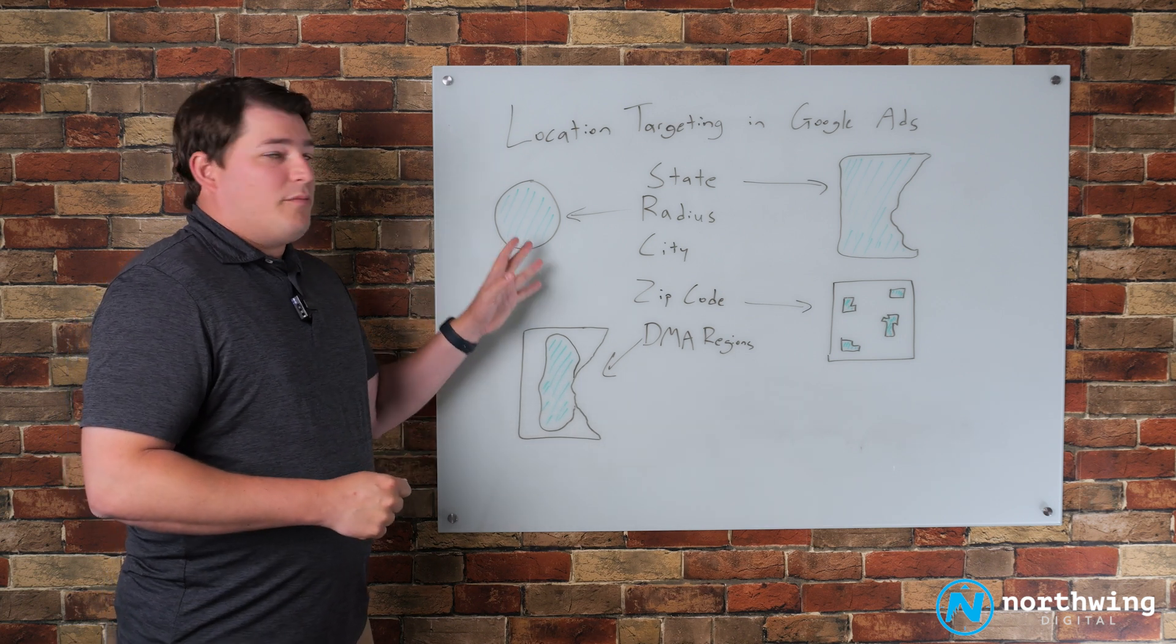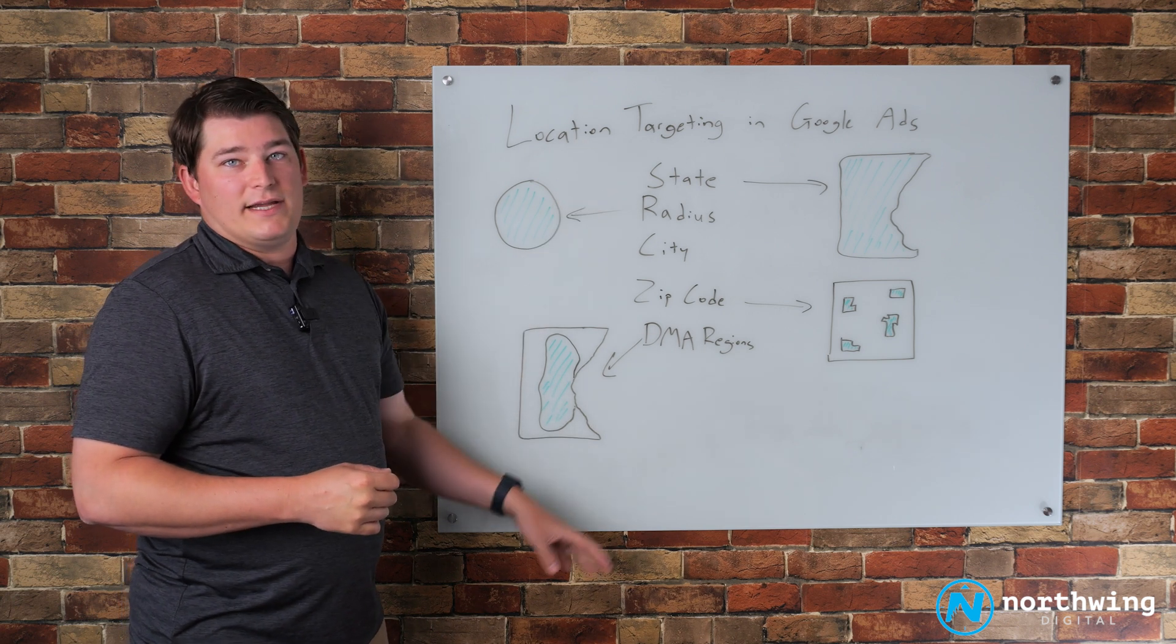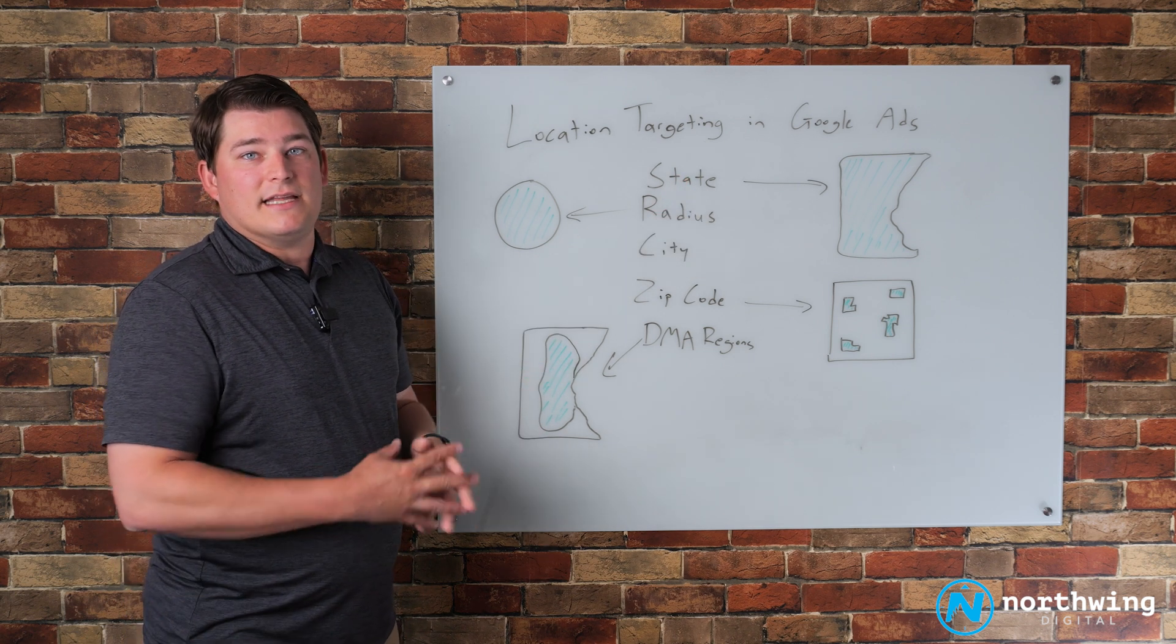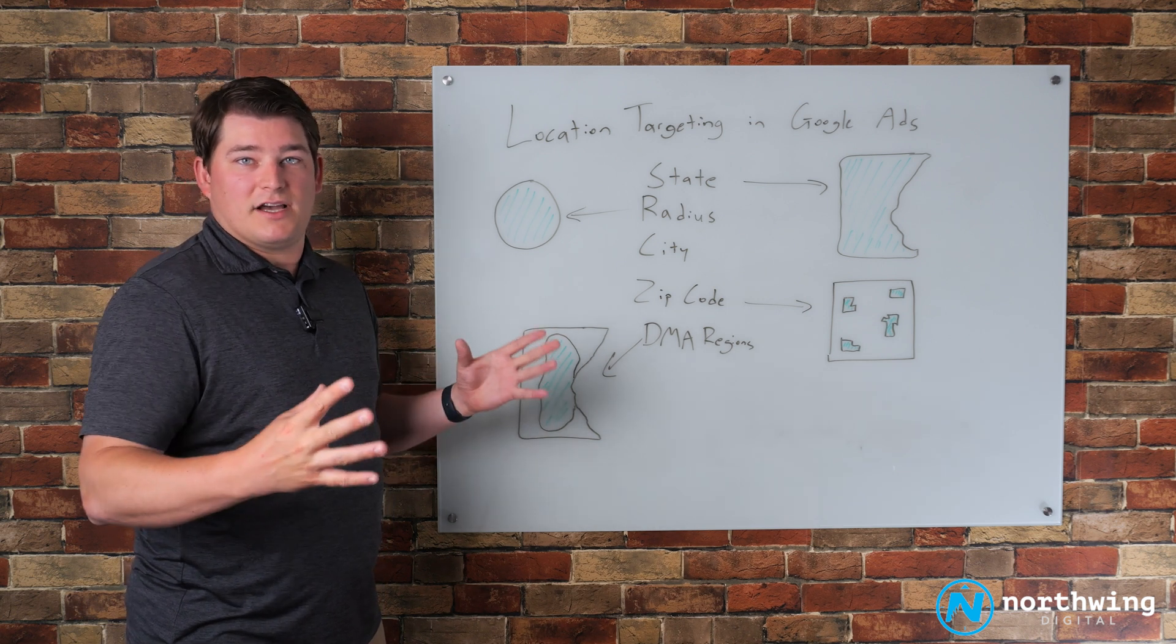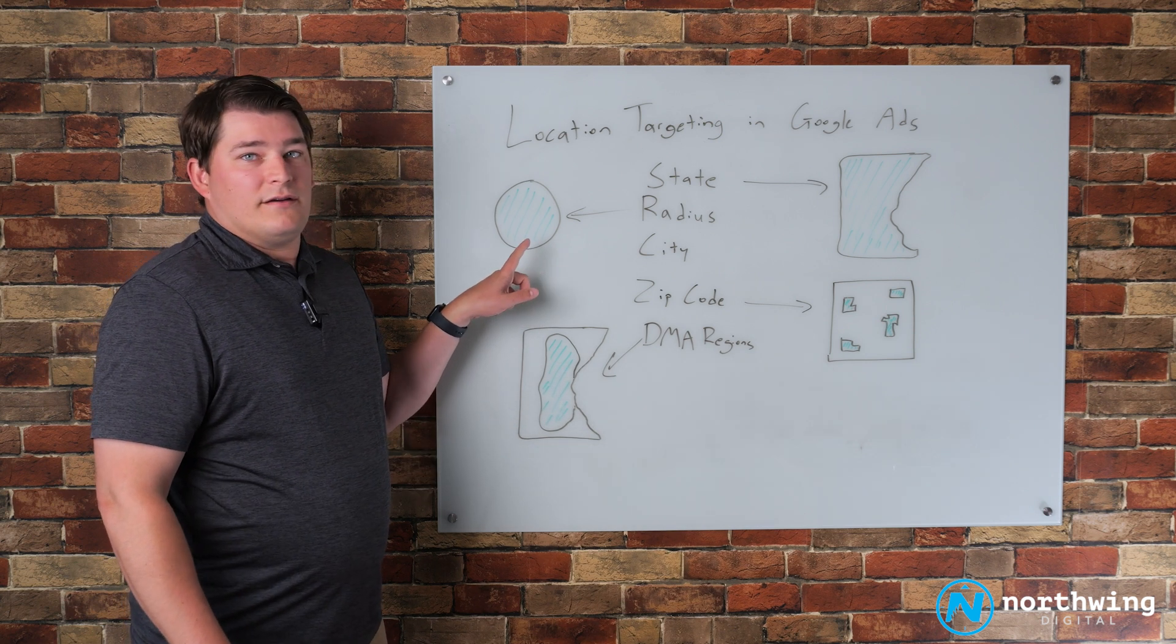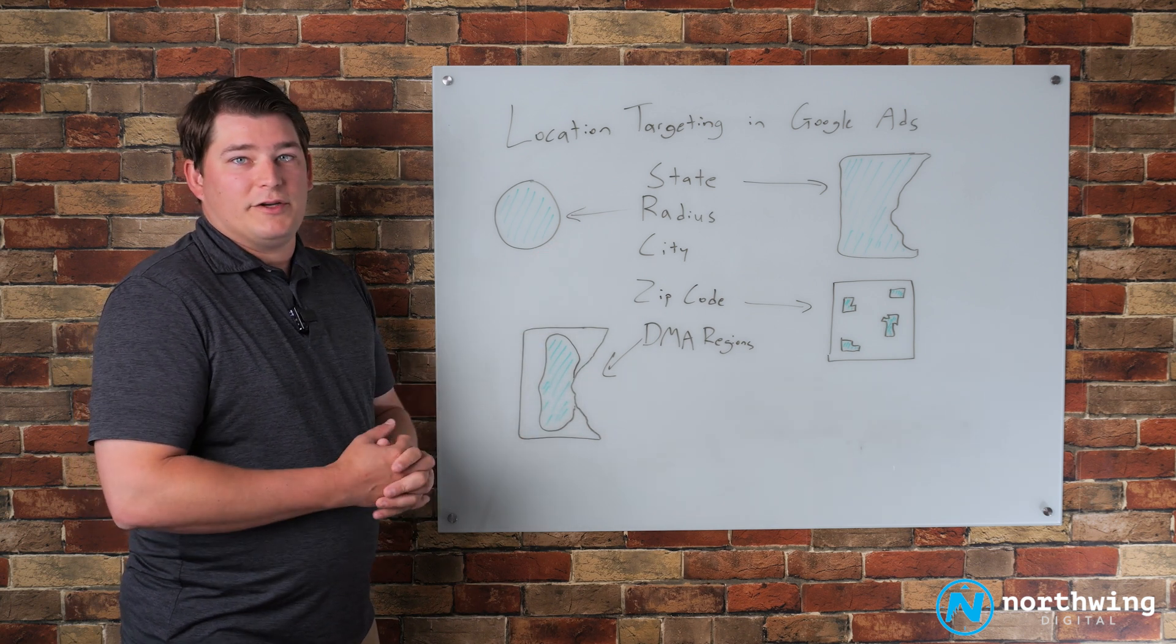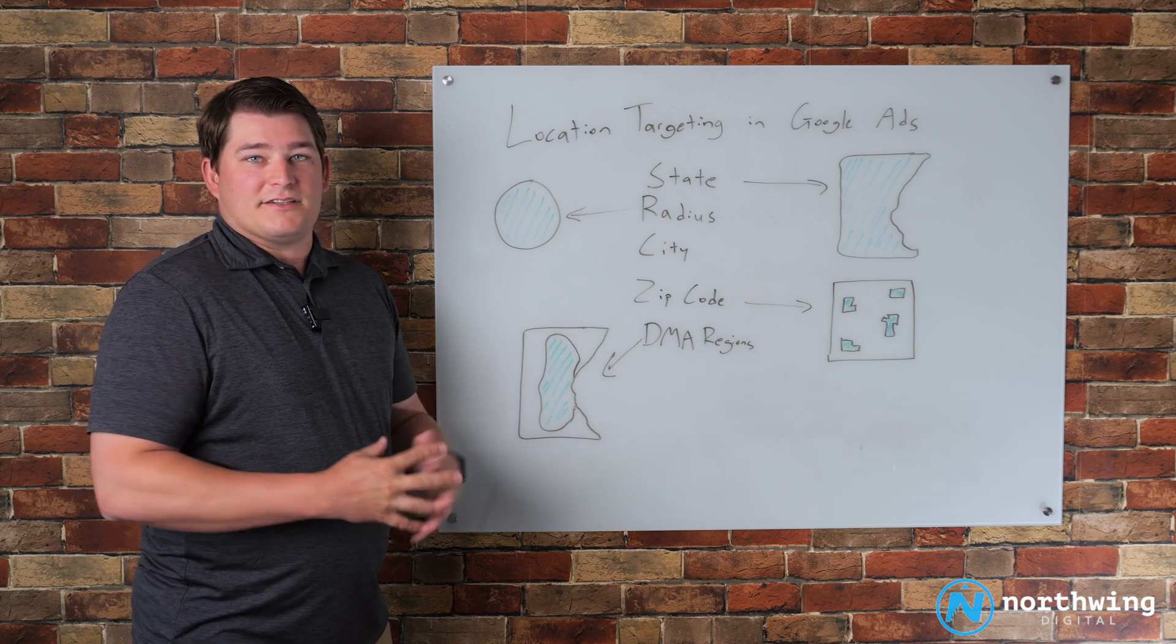I hope this helps answer some questions. Moral of the story is, there's a lot of different ways to target locations. We definitely have some of our preferred. I think if you can be state-based, that's the easiest, the most straightforward, to cast as wide a net as you can if your service area does cover entire states. If it does not, and it's smaller, I would default to radius targeting, and then look at some of these other options from there if this is too broad for you. If you've been working on targeting locations in Google Ads, I hope that helps. If you have any other questions, let us know. Thanks.